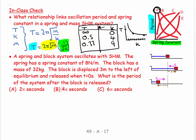The next thing: a spring has a spring constant of 8, so k equals 8 newtons per meter. The block has a mass of 32 kilograms. The block is displaced 3 meters, so x equals 3 meters.